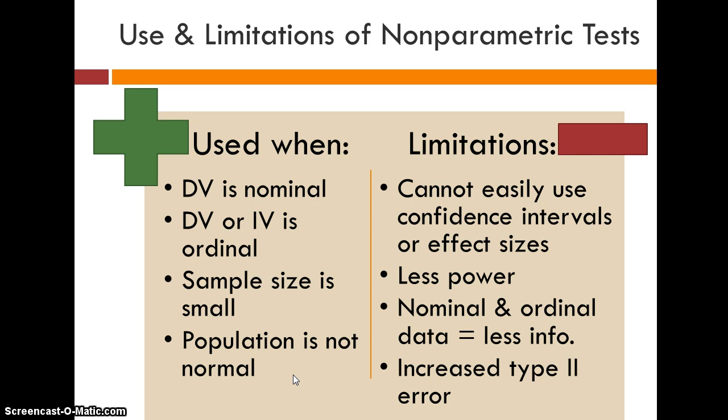If the dependent variable or the independent variable is ordinal, we can use a non-parametric test. Sometimes we use them when the sample size is small because we really don't know what the distribution of scores is like in the population. Or we know for certain that the population is not normal.